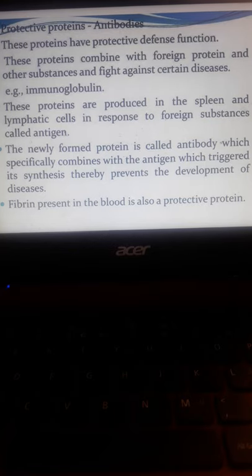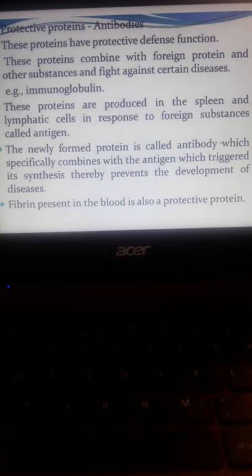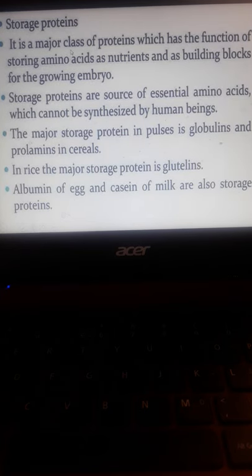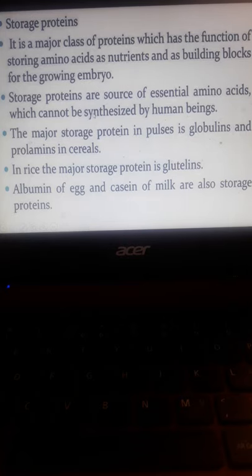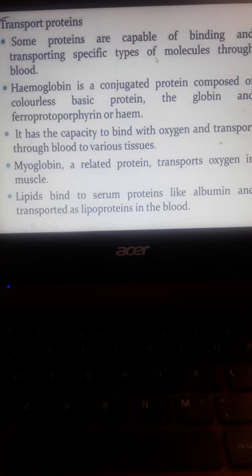Fibrin is also known to be a protective protein responsible for protection in blood coagulation. Storage proteins are the major class of proteins which have functions for storing amino acids and building blocks of the growing embryo. Storage proteins are source of essential amino acids which cannot be synthesized by human beings. Storage proteins are found in globulins and prolamins in cereals. We have major storage proteins in glutelins, albumin of egg, casein of milk.